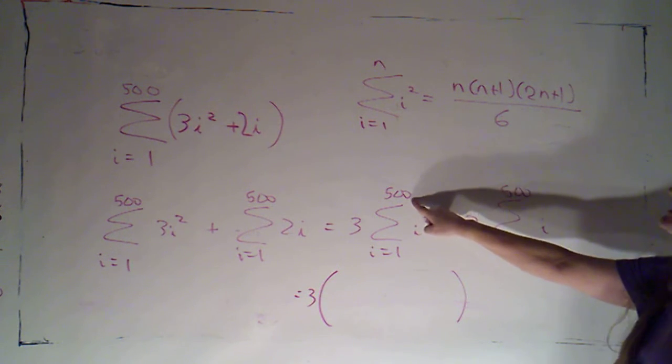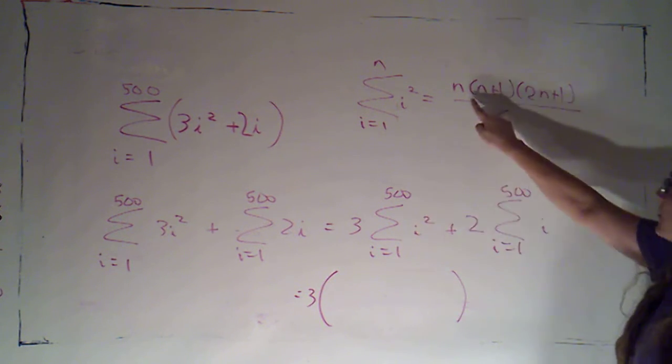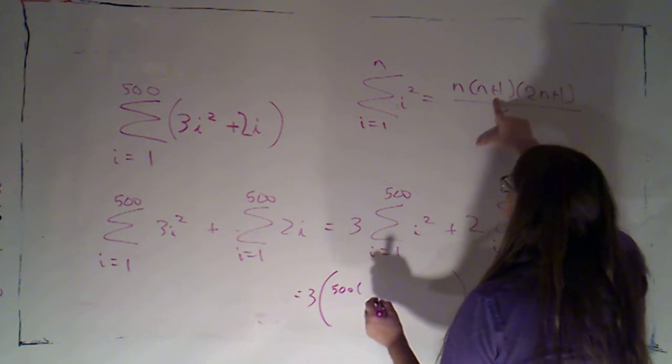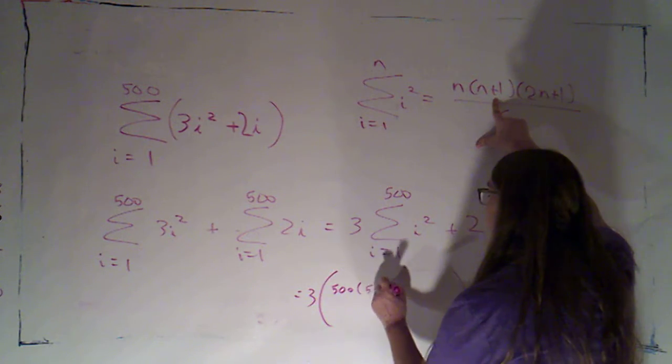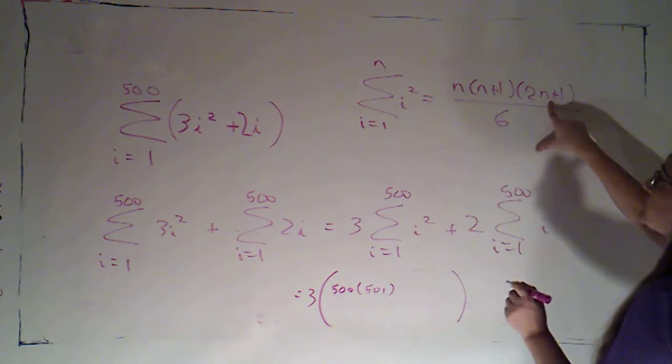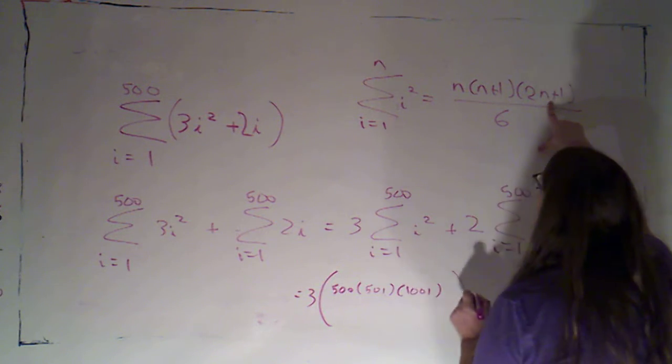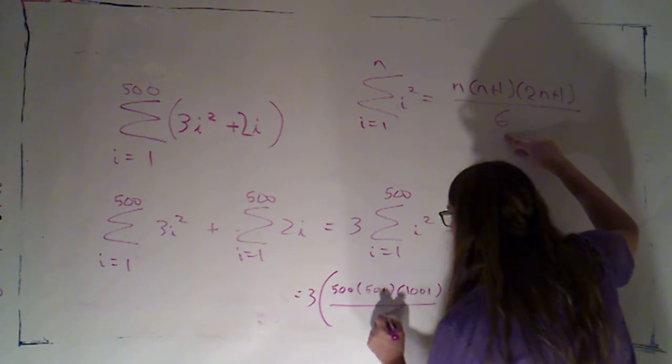So this is going to be three times, I'm just going to take this formula for the i squareds and what I'm plugging in for N is 500. So on top I'm going to get five hundred times five hundred and one times two times five hundred is a thousand plus one is a thousand and one all divided by six.